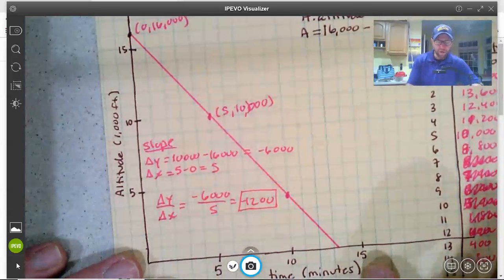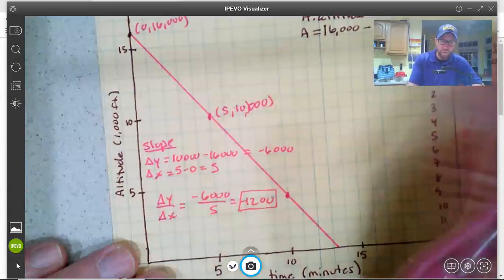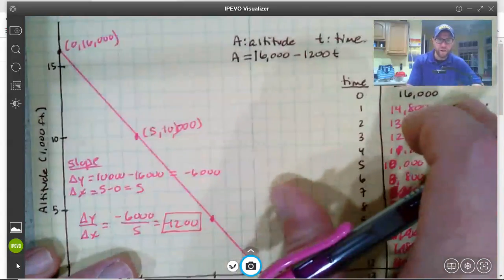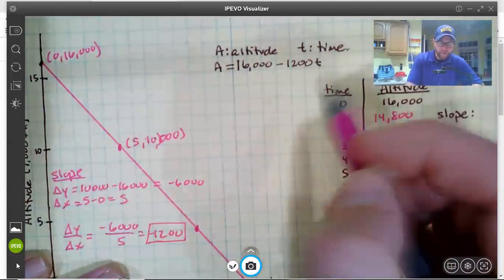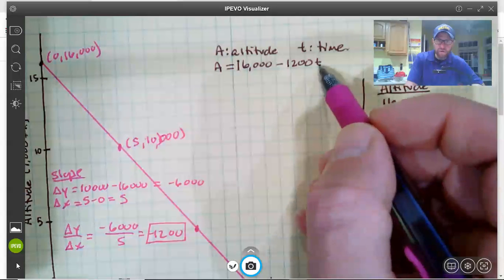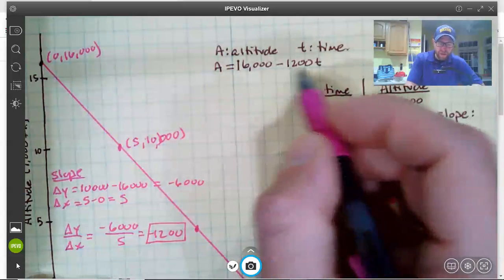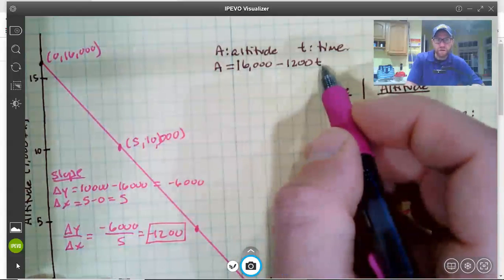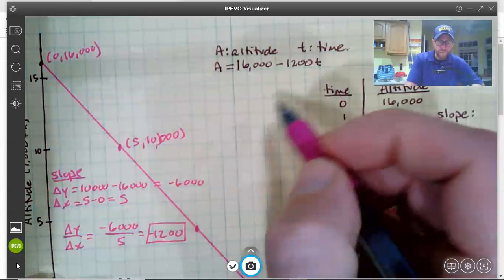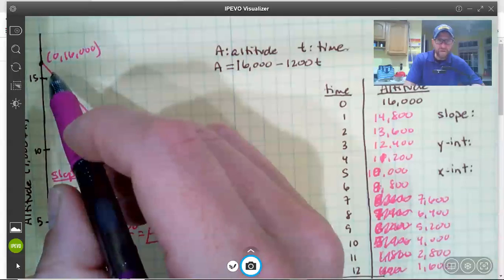So then we can write our equation in slope intercept form. And I've actually kind of already done that up here. So if we use T as our variable T is time, the slope is M X. So negative 1,200 times T and our Y intercept was at 16,000.